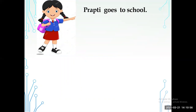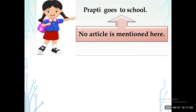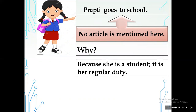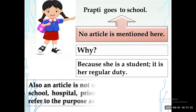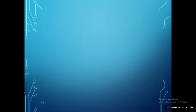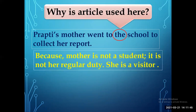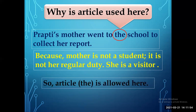Rule 8: Look at the sentence — 'Trapti goes to school.' No article is used before 'school' because it is her regular duty as she is a student. Article is not used before the names of school, hospital, prison, bed, home, etc. when we refer to the purpose as a regular duty. On the other hand, look at this sentence: 'Trapti's mother went to the school to collect her record.' Here 'the' is used before 'school' because the mother is not a student — it is not her regular duty. She is a visitor, so the article is allowed here.